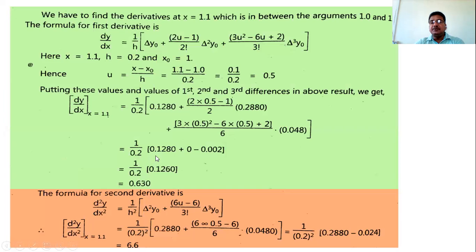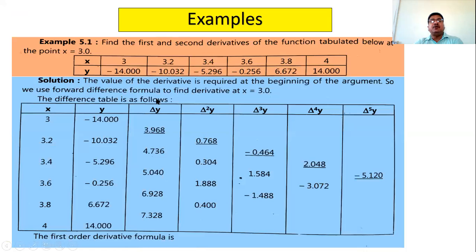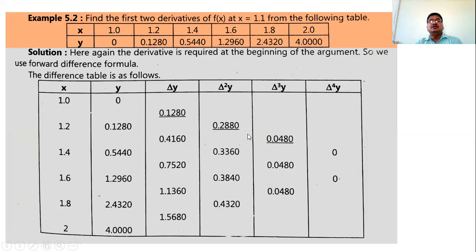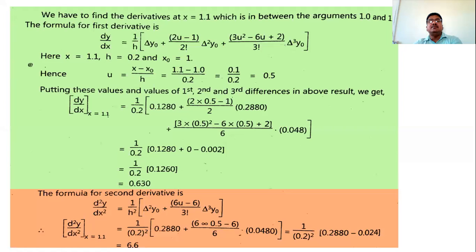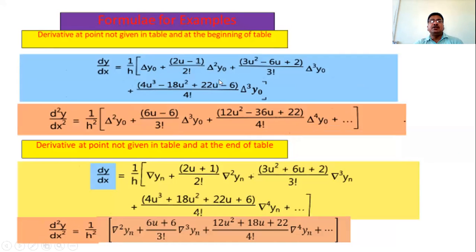This completes the example for first and second order derivatives when the point is not given in the table. From an examination perspective, problems where the point is given in the table at the beginning or end are more important. Problems where the point is not in the table are in the syllabus but less commonly tested. If the point is not given and is near the beginning, use the general forward formula.